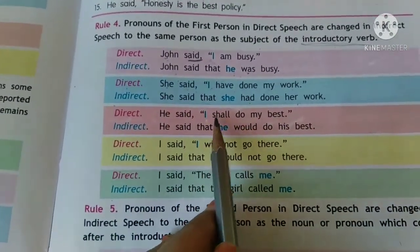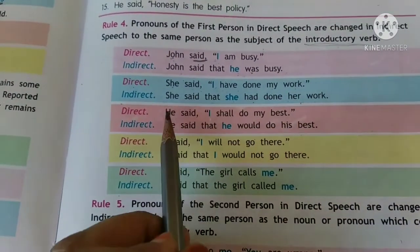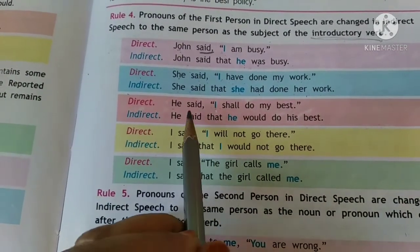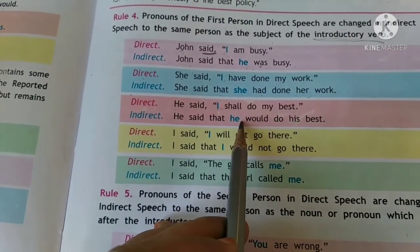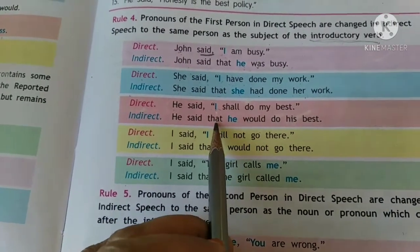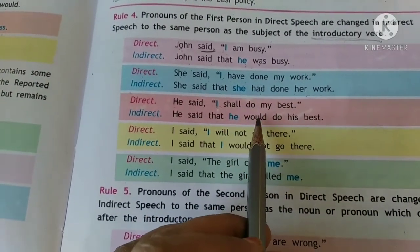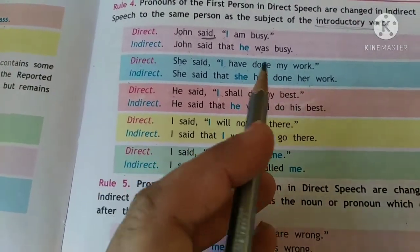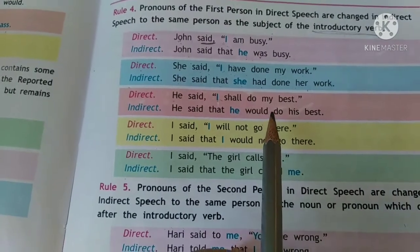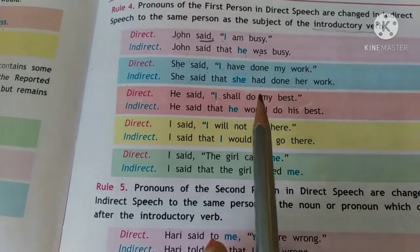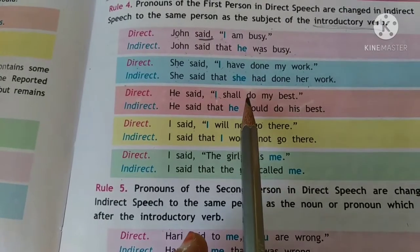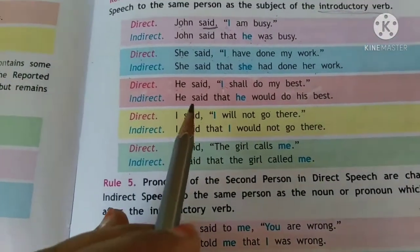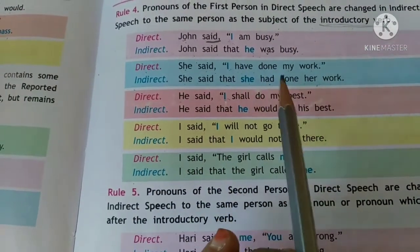He said, 'I shall do my best.' So 'I' is this 'he'. When we make it indirect: he said that he — 'shall' will become 'should', but when we write or speak in English, we don't say 'should', so it will be 'would' — would do his best. If you write 'should' by mistake in your exam, it is not wrong, but when we speak, we need to speak correct English, so we write 'would'.